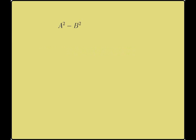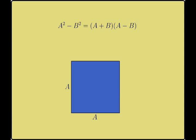The factorization of A squared minus B squared into A plus B times A minus B may be viewed geometrically. The number A squared may be interpreted as the area of a square with sides of length A.